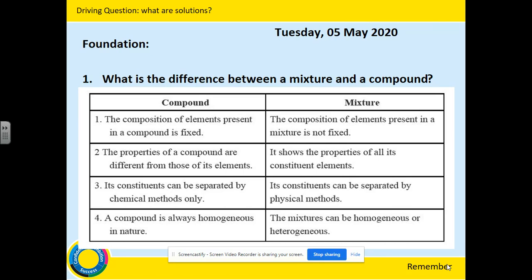Three: the constituents of a compound can be separated by chemical method only. In a compound, the substances or elements are chemically bonded to each other, and sometimes these reactions are very difficult to reverse — some you can reverse and some you can break the bonds between, but it is only separated by chemical methods. For mixtures, constituents can be separated by physical methods such as filtration, distillation, chromatography, and crystallisation.